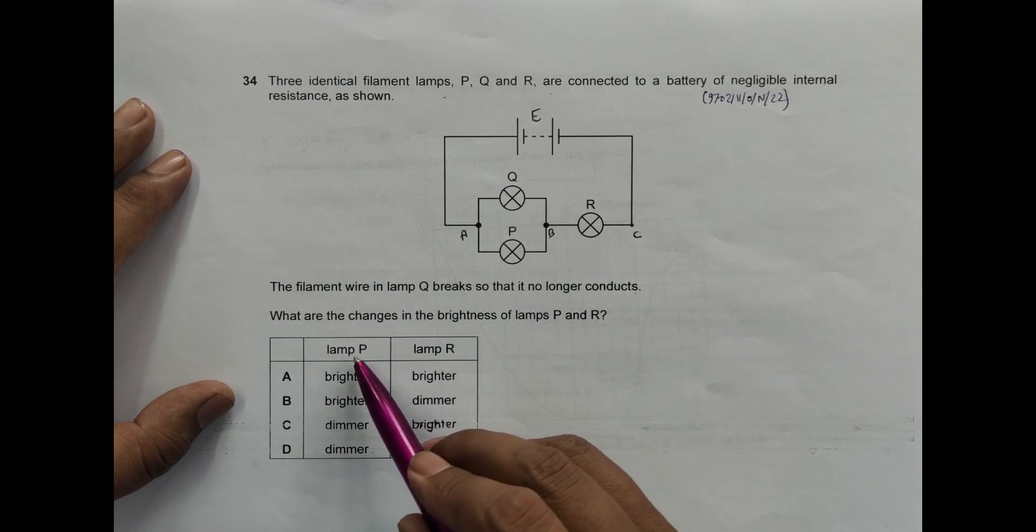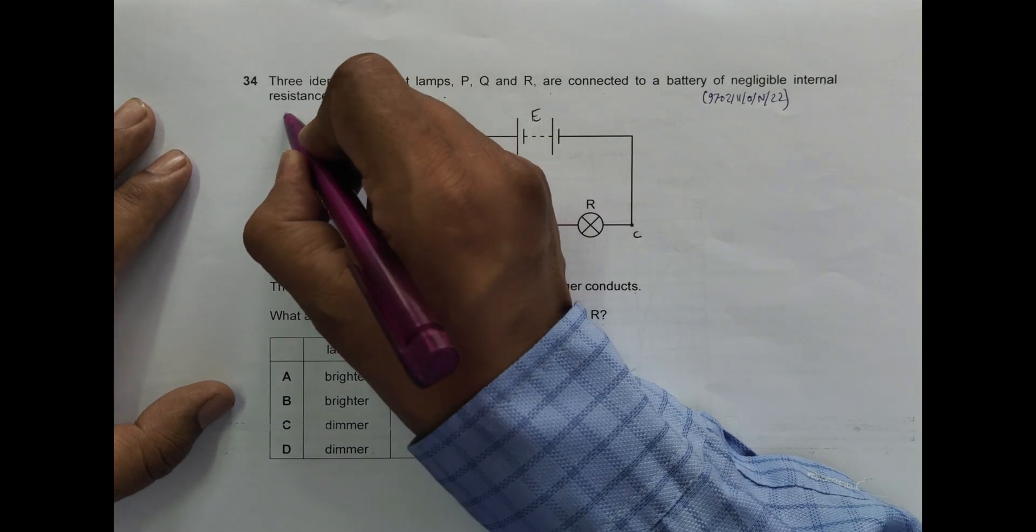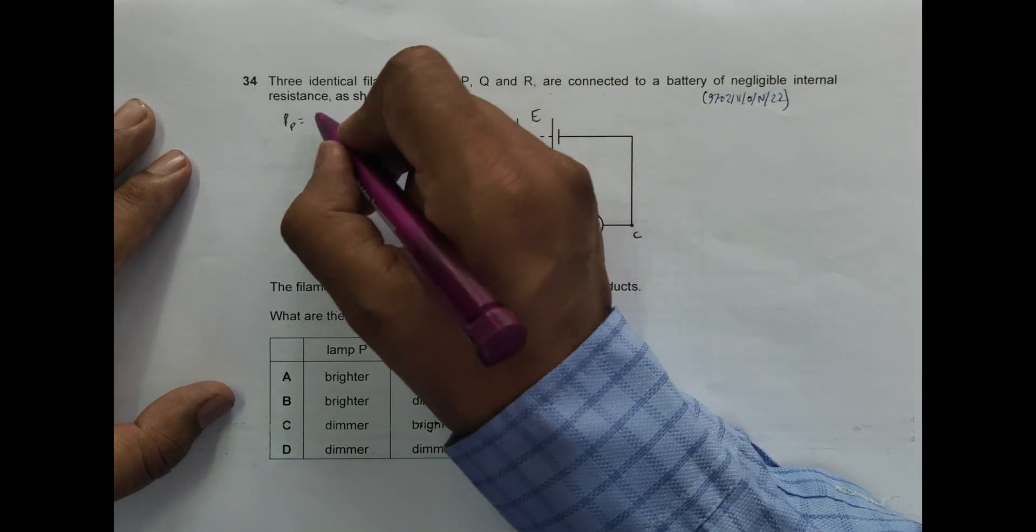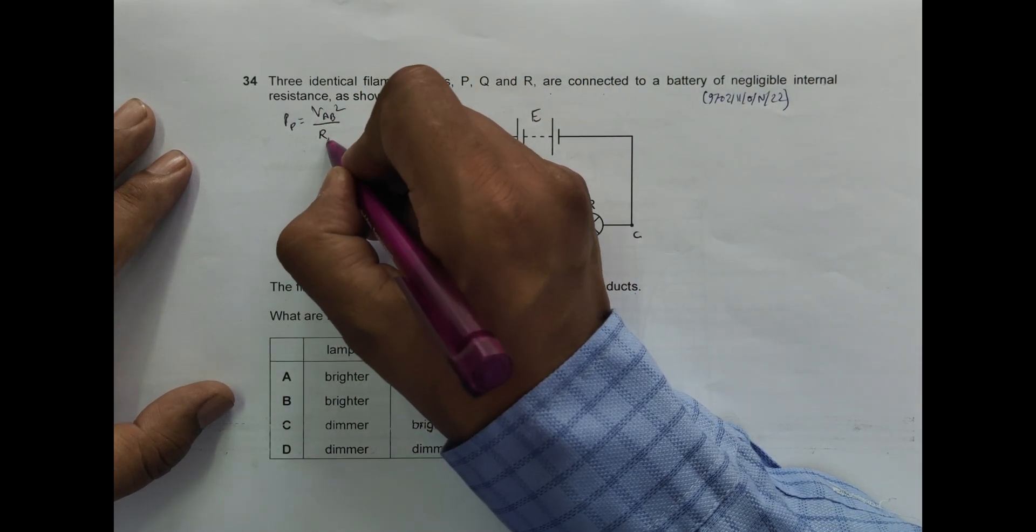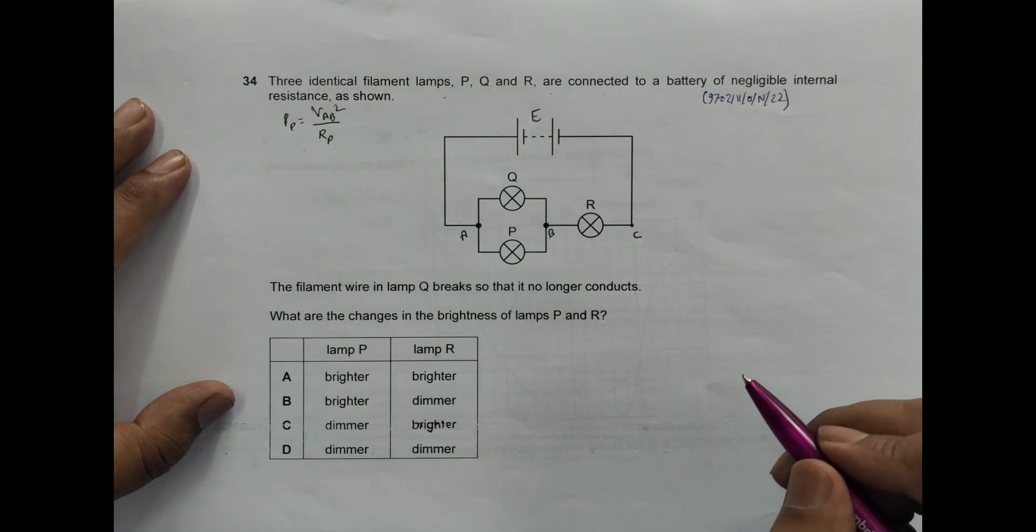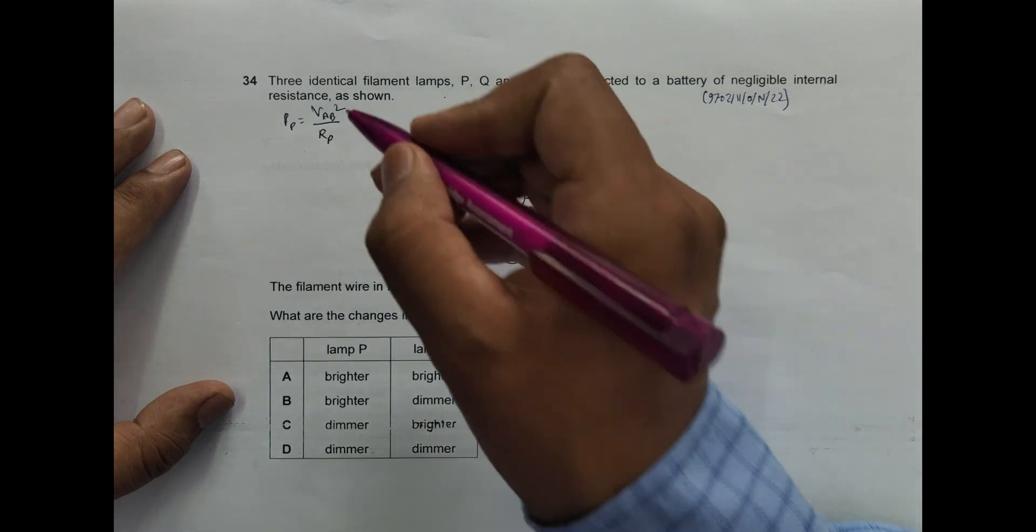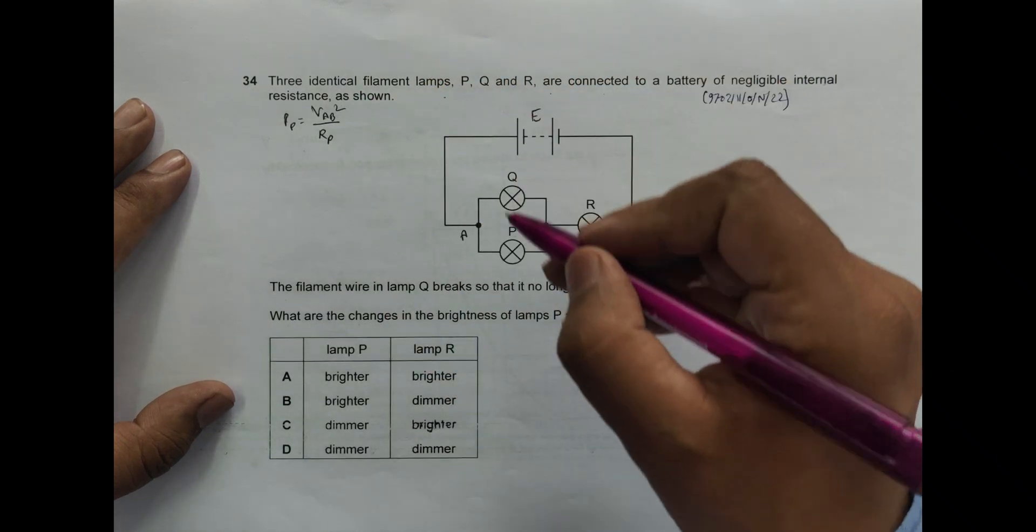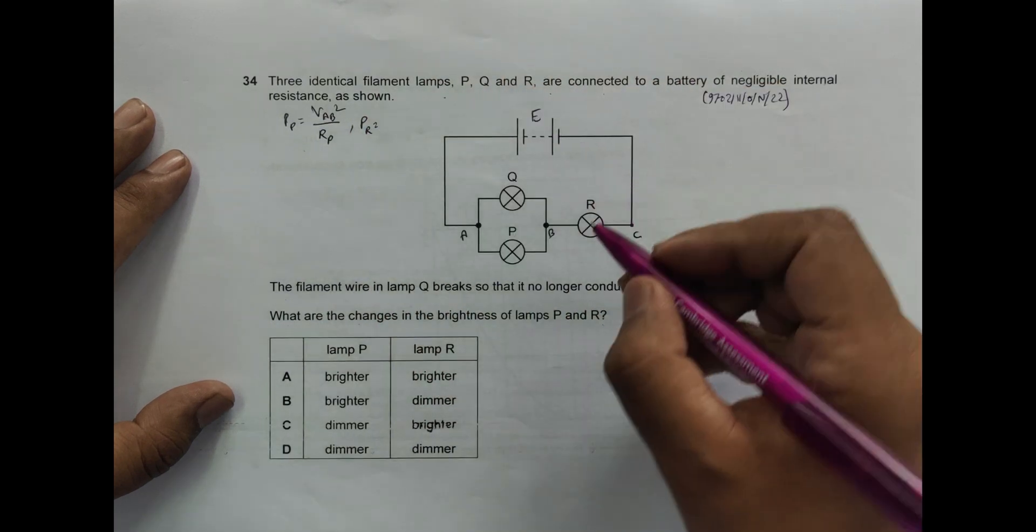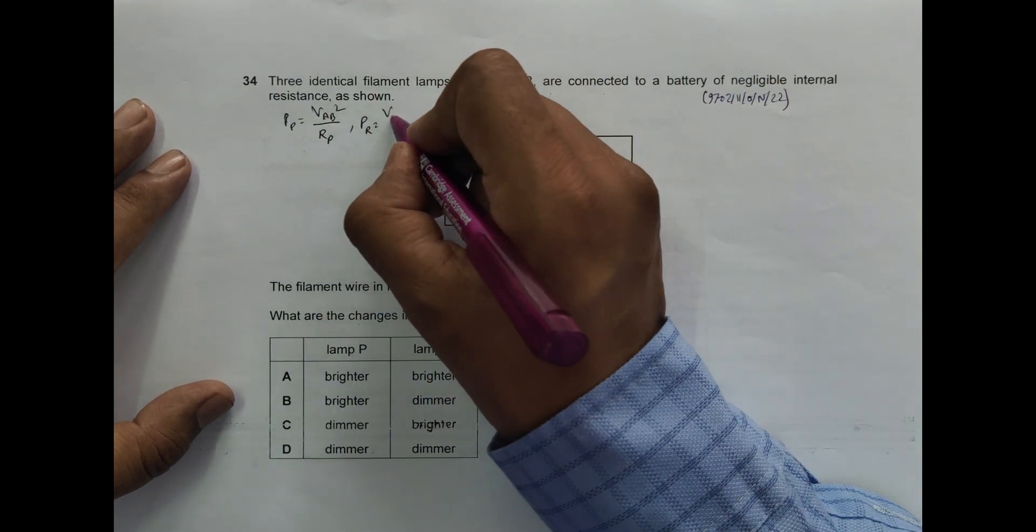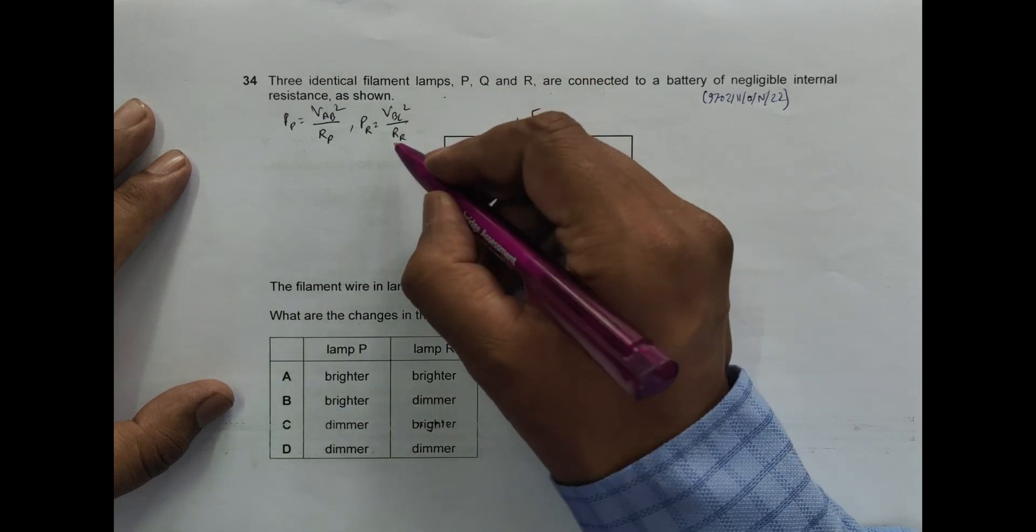The power consumed by P, P_P, will be equal to V_AB squared by R_P. R_P and R_Q are all identical so it's V_AB squared by R_P. And similarly the power consumed by R should be equal to V_BC squared by R_R. R_P and R_R are equal.